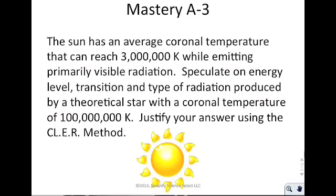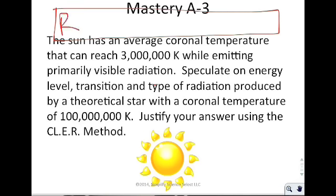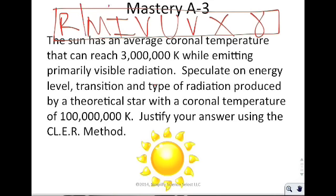A mastery-level question: the sun has an average coronal temperature reaching 3 million Kelvin while emitting primarily visible radiation. Speculate on the energy level, transition type, and radiation type produced by a theoretical star with a coronal temperature of 100 million Kelvin. Looking at the spectrum — radio, micro, infrared, visible, UV, X, gamma — if providing more energy, it moves toward gamma, not toward radio. So the answer would be correct.